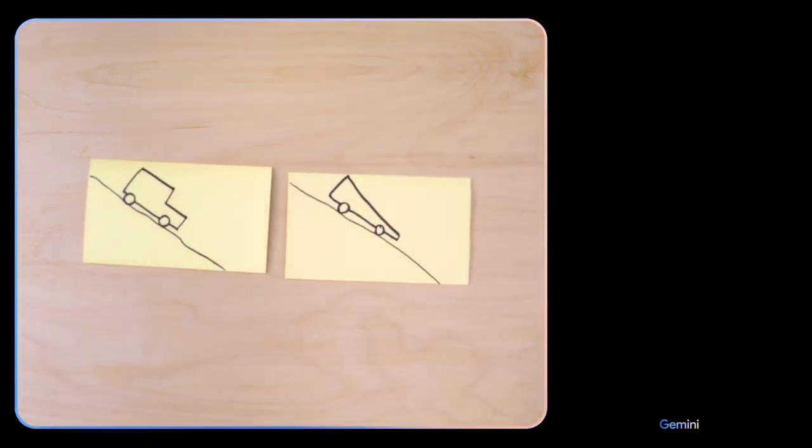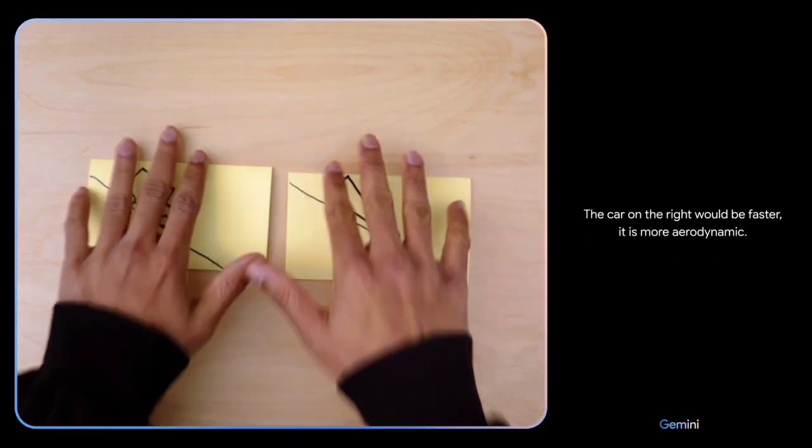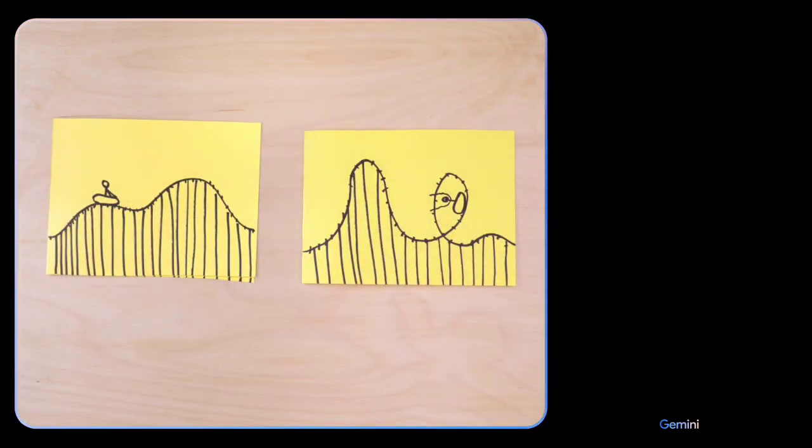Based on their design, which of these would go faster? The car on the right would be faster. It is more aerodynamic. Which looks more fun? The one on the right, because it has a loop.